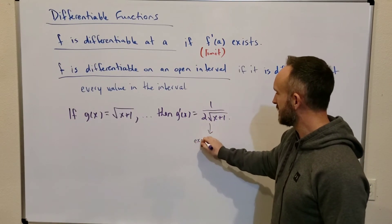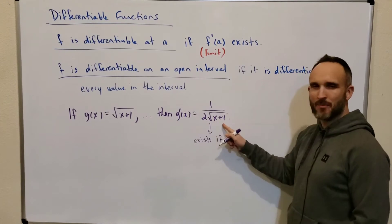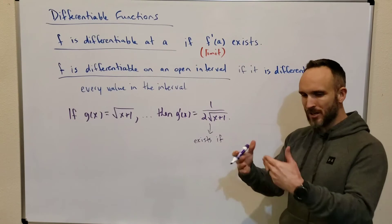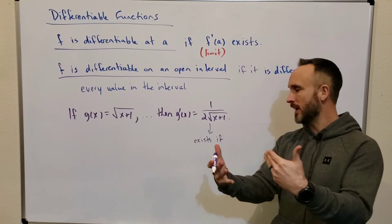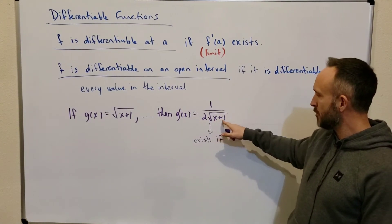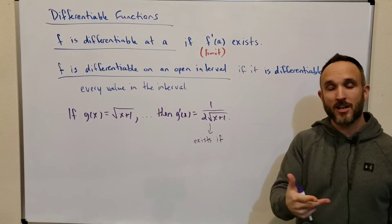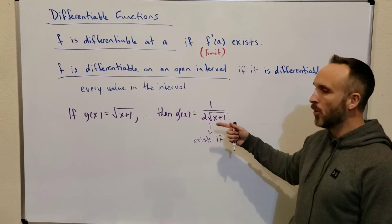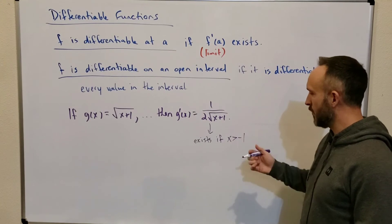Clearly x can't be negative 1 because we'd be dividing by 0. But also, x can't be numbers smaller than negative 1, like negative 1.2. If x were negative 1.2 and you plugged it in, negative 1.2 plus 1 is negative. And the square root of a negative number is an imaginary number. So, x can't be negative 1 or anything to the left of negative 1. So, x has to be greater than negative 1.